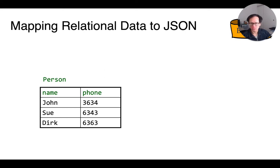Let's talk about translating data between relations and JSON documents. Mapping relations to JSON is fairly easy.